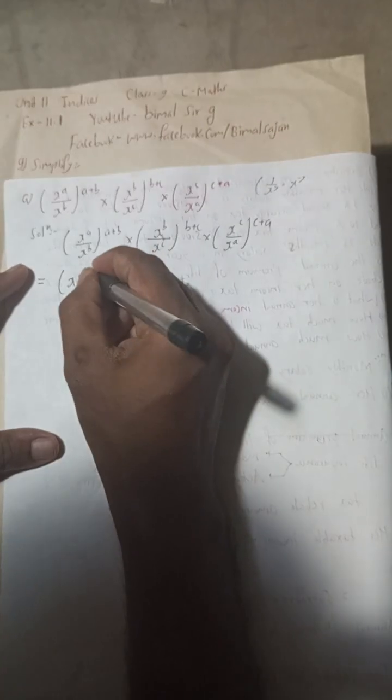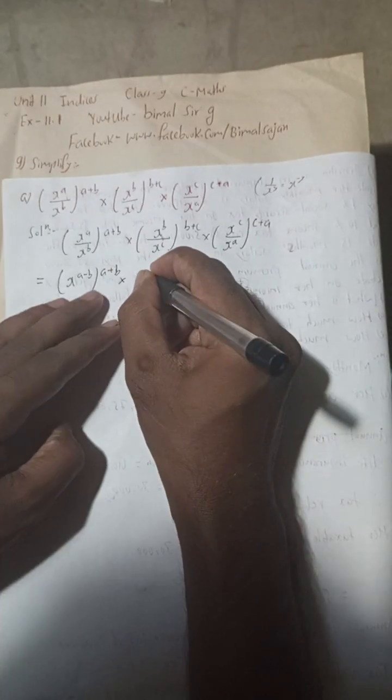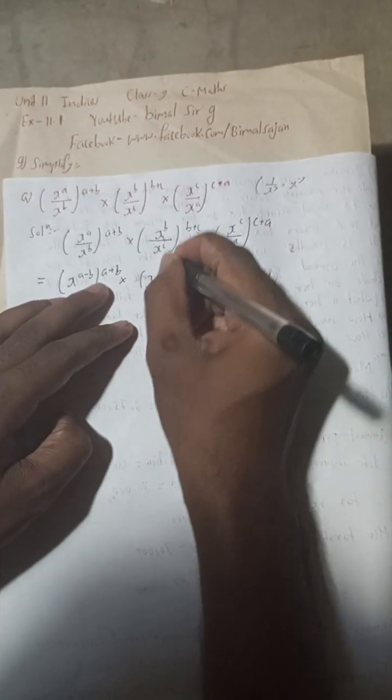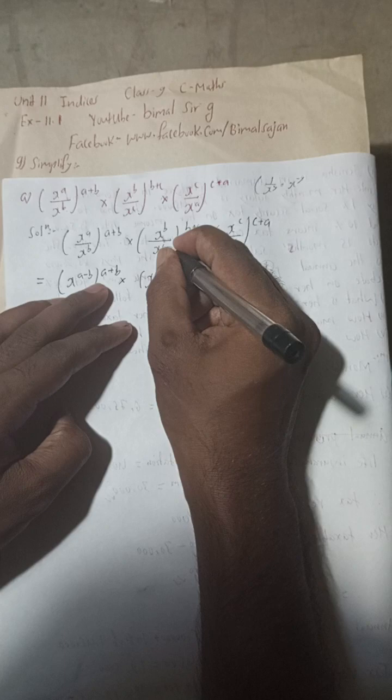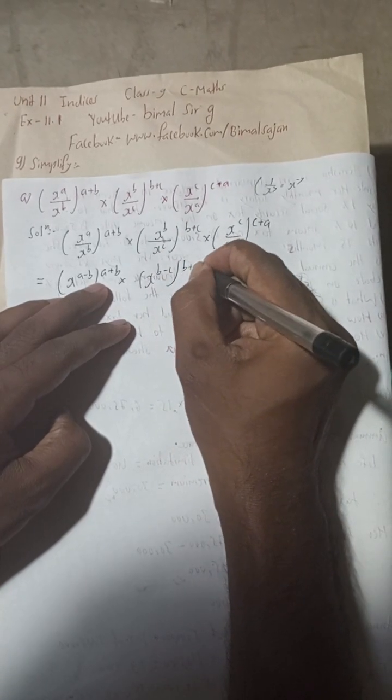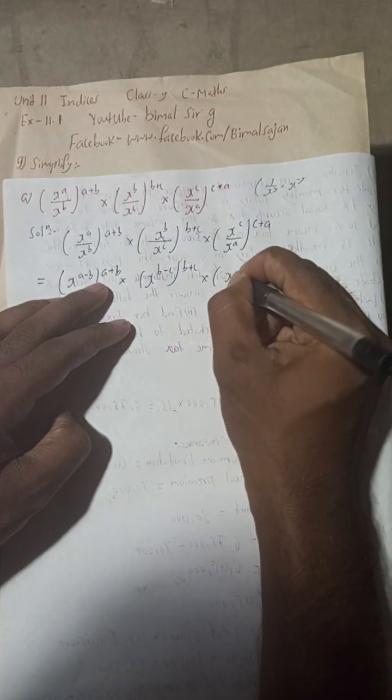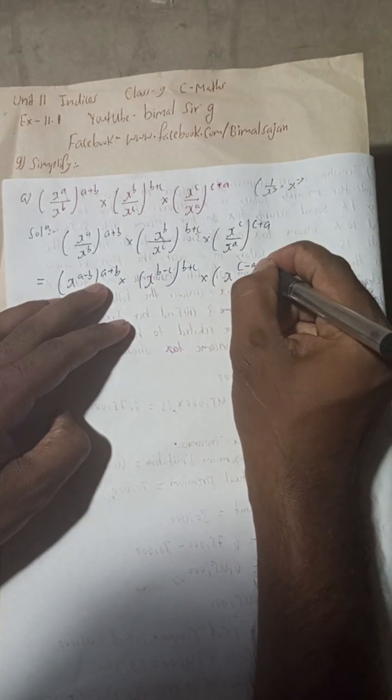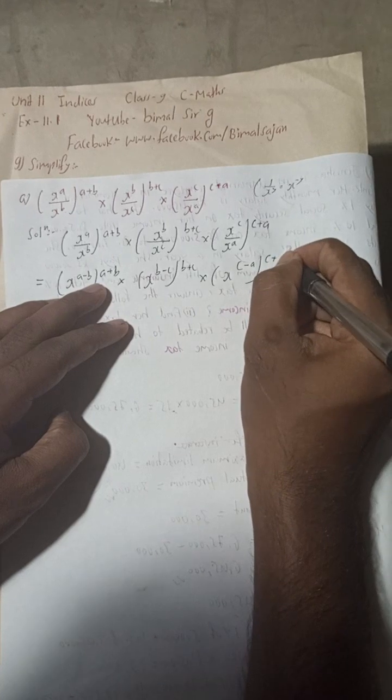When this power goes up, it will be minus b, then a+b. This is x^b, and when c goes up it will be minus c, then power b+c. This is x^c, when a goes up it will be minus a, then c+a.